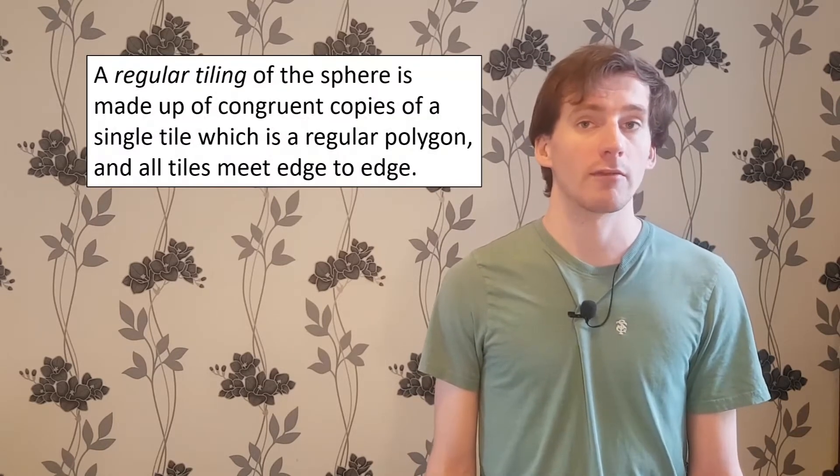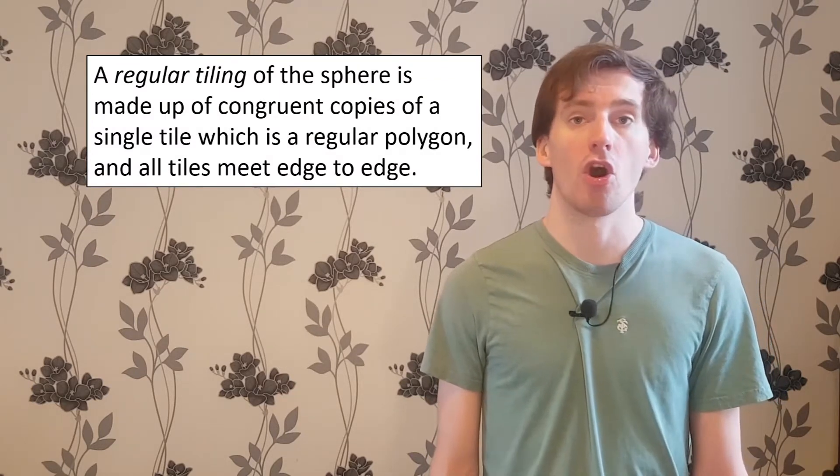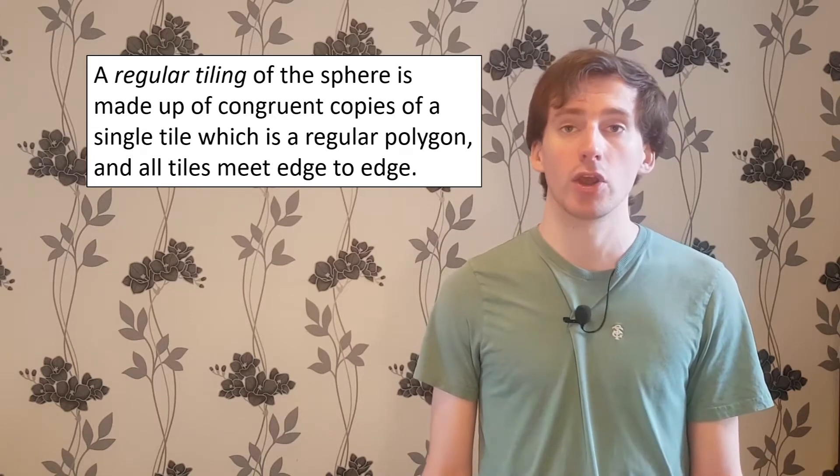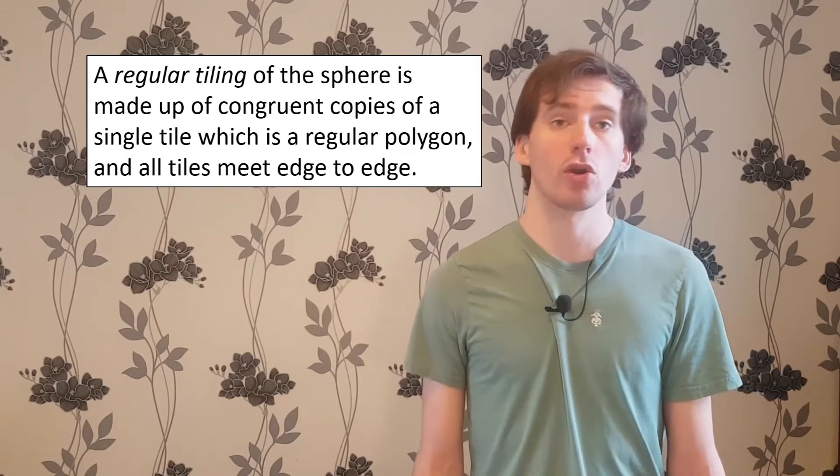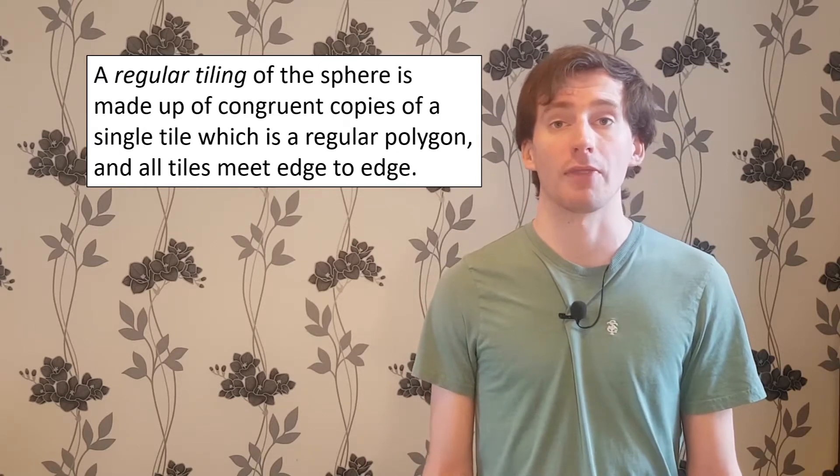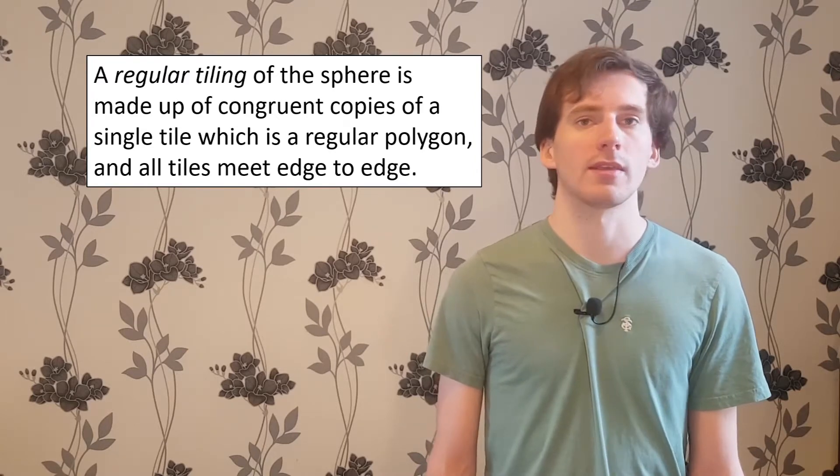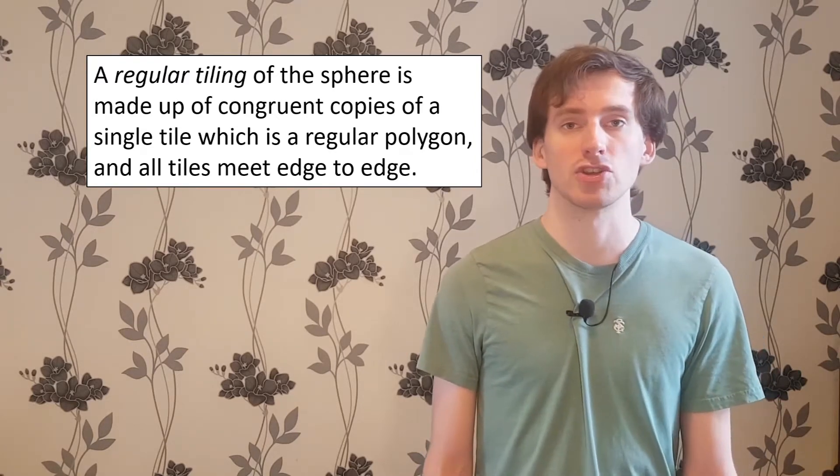If you had a go at the first lot of exercises last week, you had the chance to think about regular tilings of the plane. We can also think about regular tilings of the sphere. A regular tiling of the sphere is a tiling made up of congruent copies of a single regular spherical polygon. That is, a polygon on the sphere where all the side lengths and internal angles are the same. For such a tiling to be regular, we also insist that the tiles match up edge to edge.